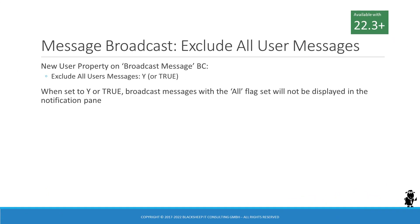Siebel Message Broadcast, also known as Notifications, has a flag to send messages to all users. When this flag is checked, the message will be visible to all users as expected. The 22.3 update introduces a new user property for the Broadcast Message business component. This user property, named Exclude All User Messages, when set to Y or True, will suppress the display of broadcast messages with the All flag in the notification pane.